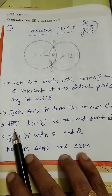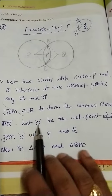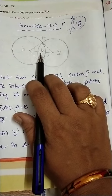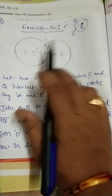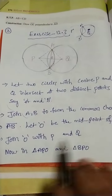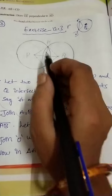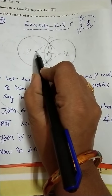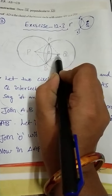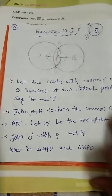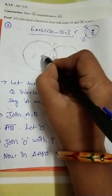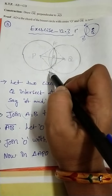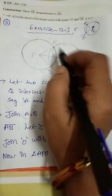Let O be the midpoint of AB. Now join O with P and Q. Also join AP, AQ, PB, and BQ.